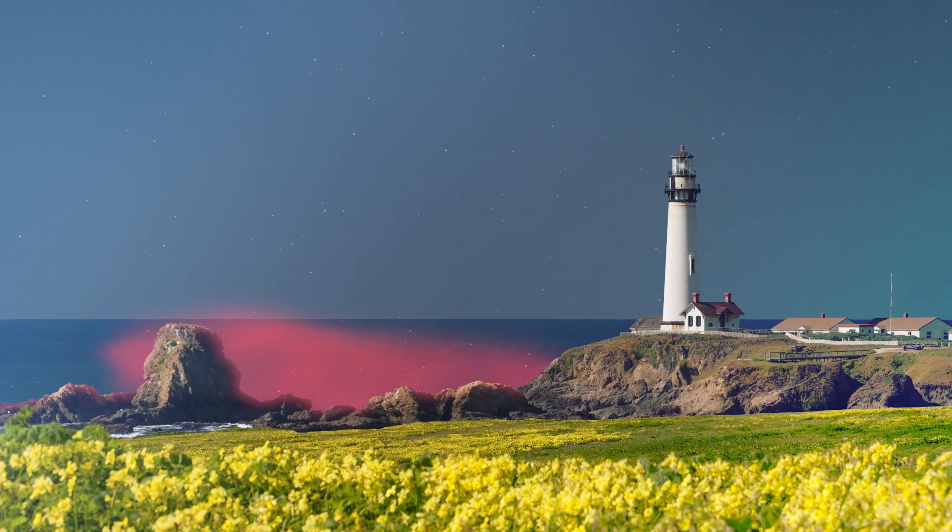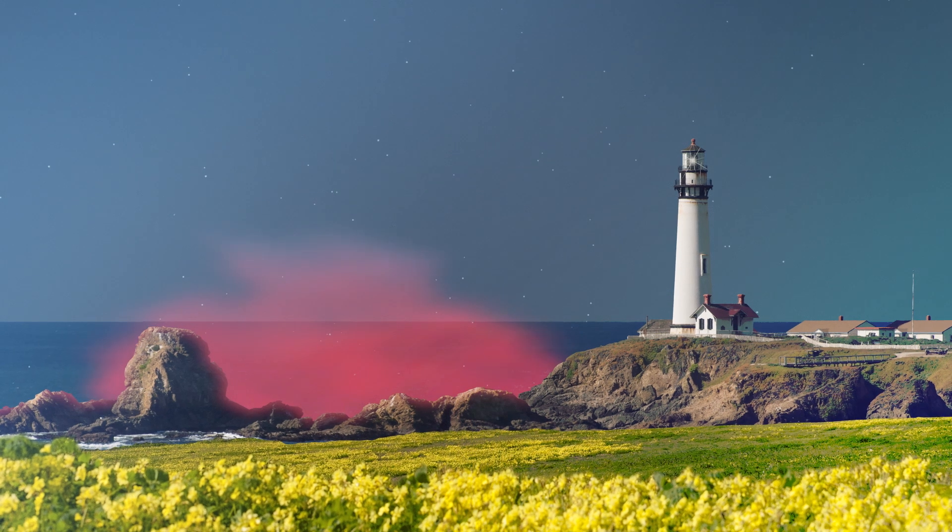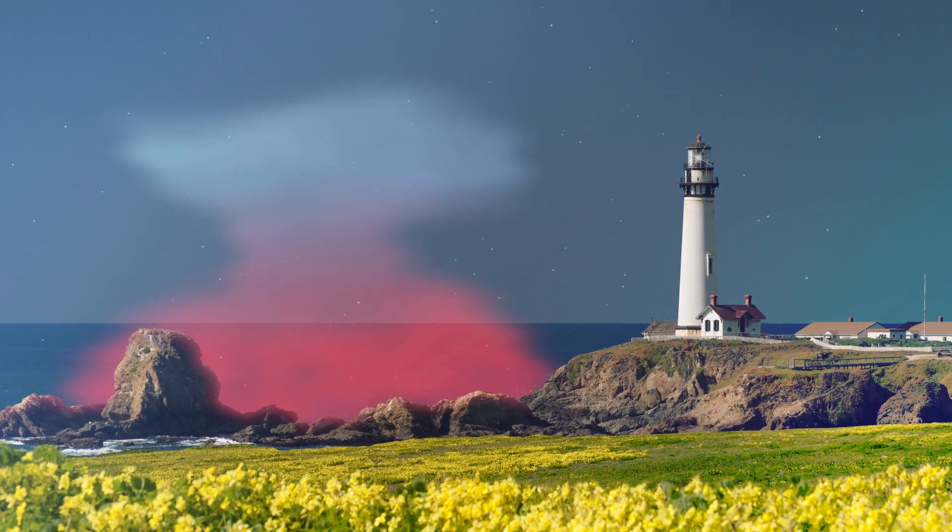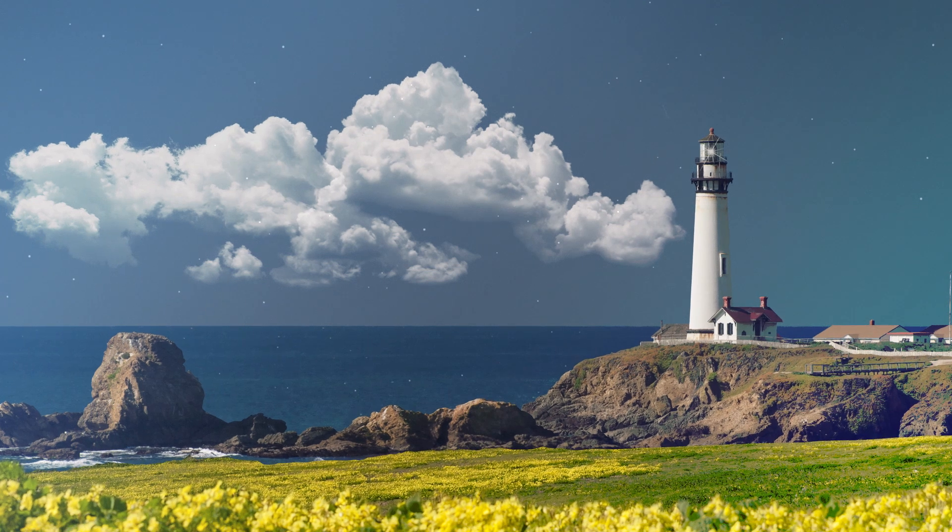This same process can occur in air masses over the Earth's surface and is a major driver in the formation of clouds and thunderstorms. As moist air near the surface warms, it moves vertically in the atmosphere into cooler areas. As the air cools, the moisture condenses and creates a cloud or a thunderstorm.